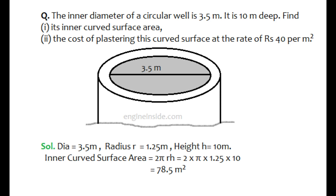The next question says the inner diameter of a circular well is 3.5 meter and it is 10 meter deep. Find the inner curved surface area and the cost of plastering this curved surface area — shown in gray color — at the rate of rupees 40 per meter square. From the given data, diameter is 3.5 meter, so radius r is equal to 1.75 meter, and height is equal to 10 meter.